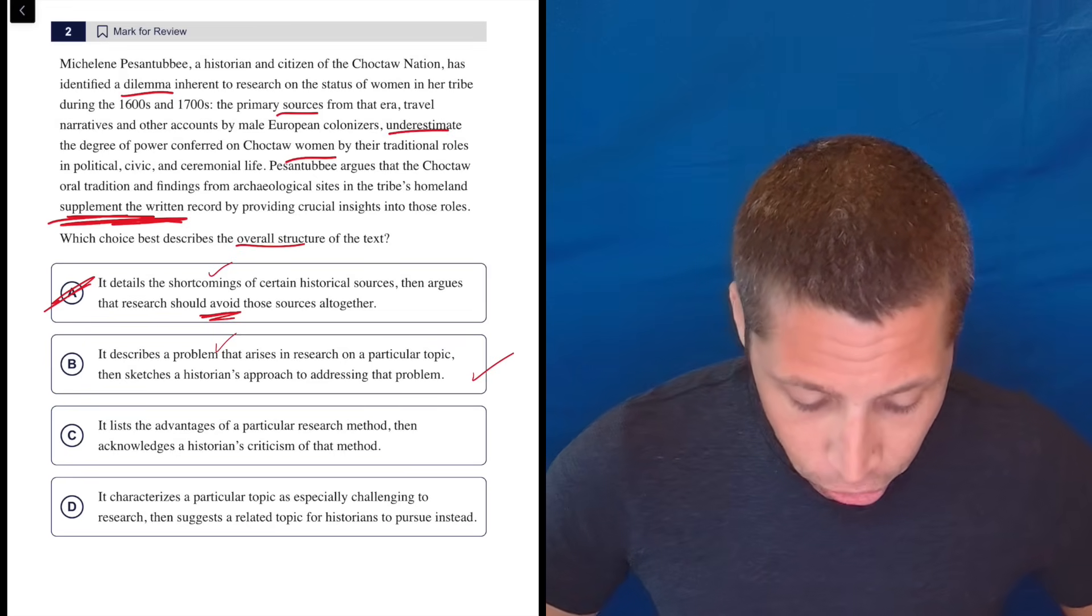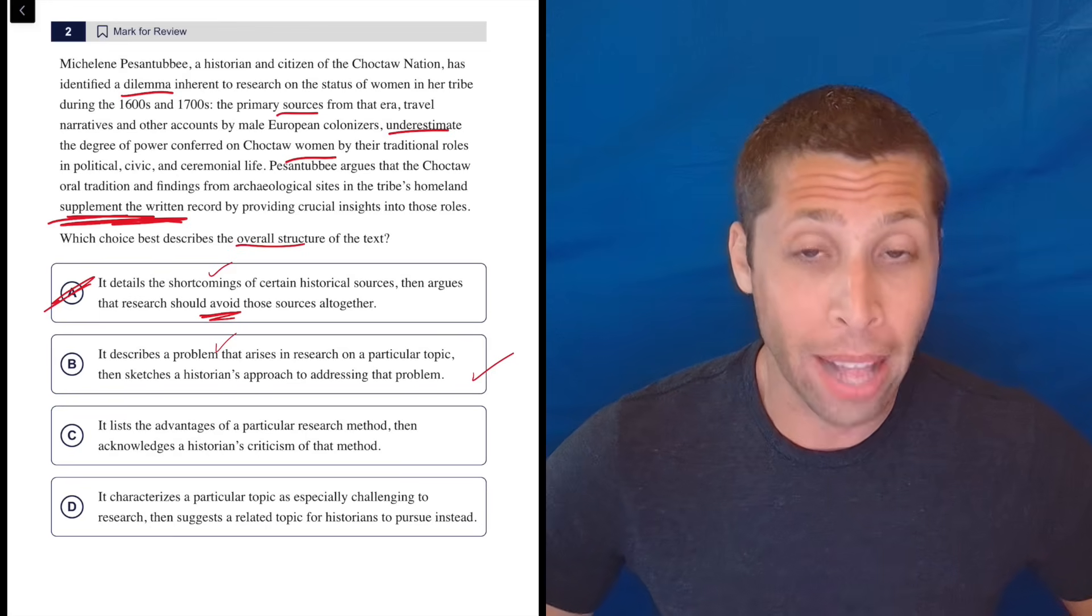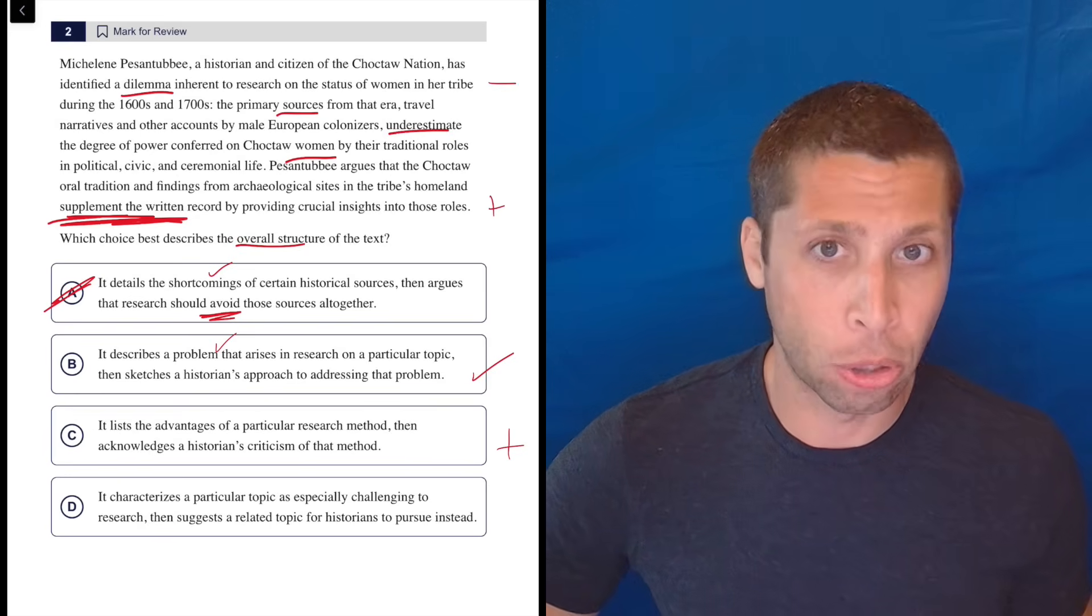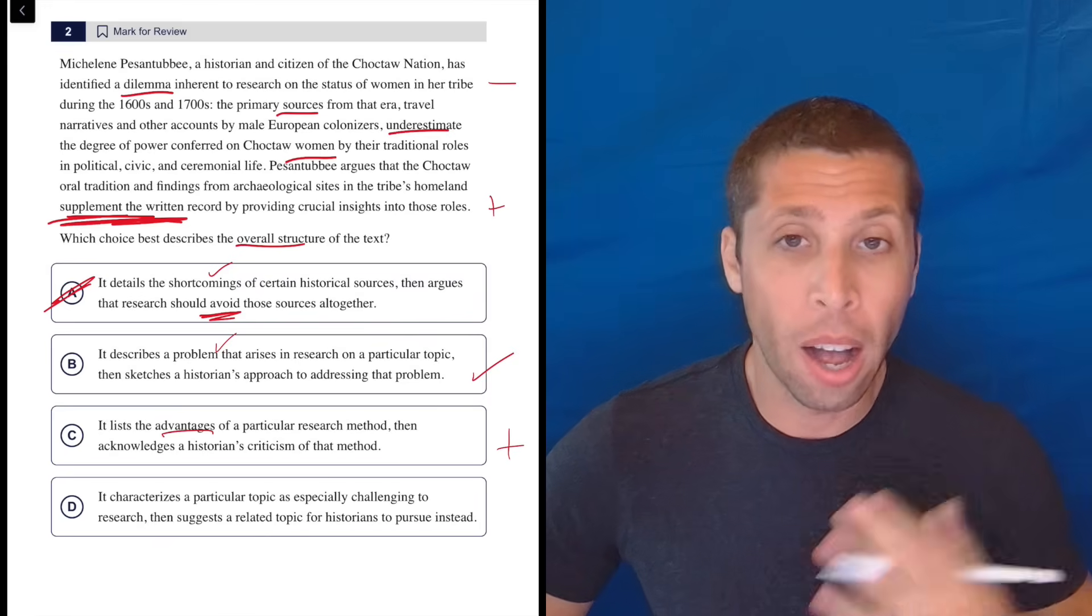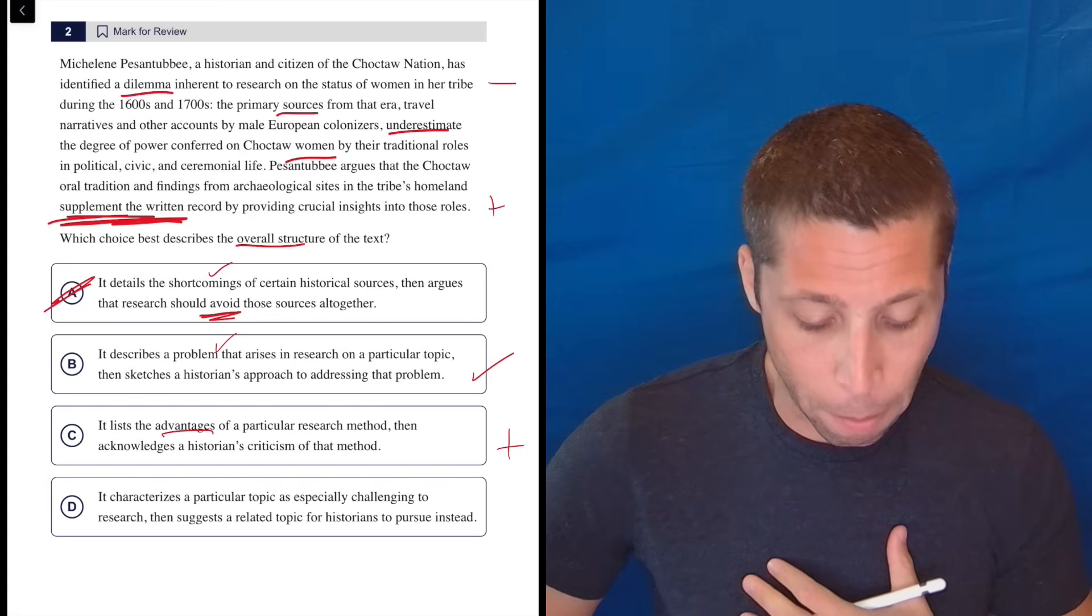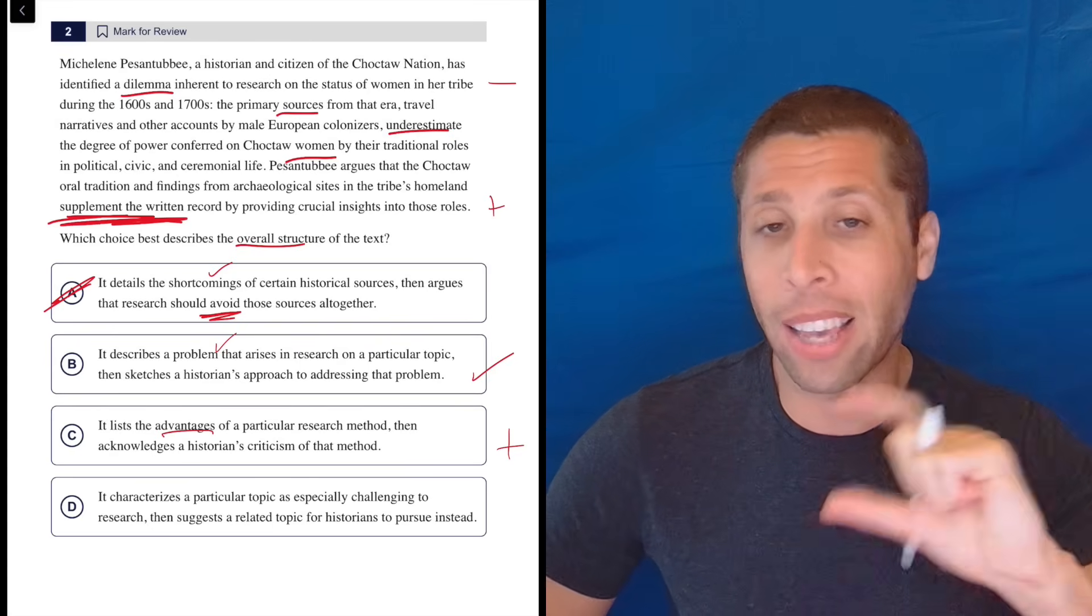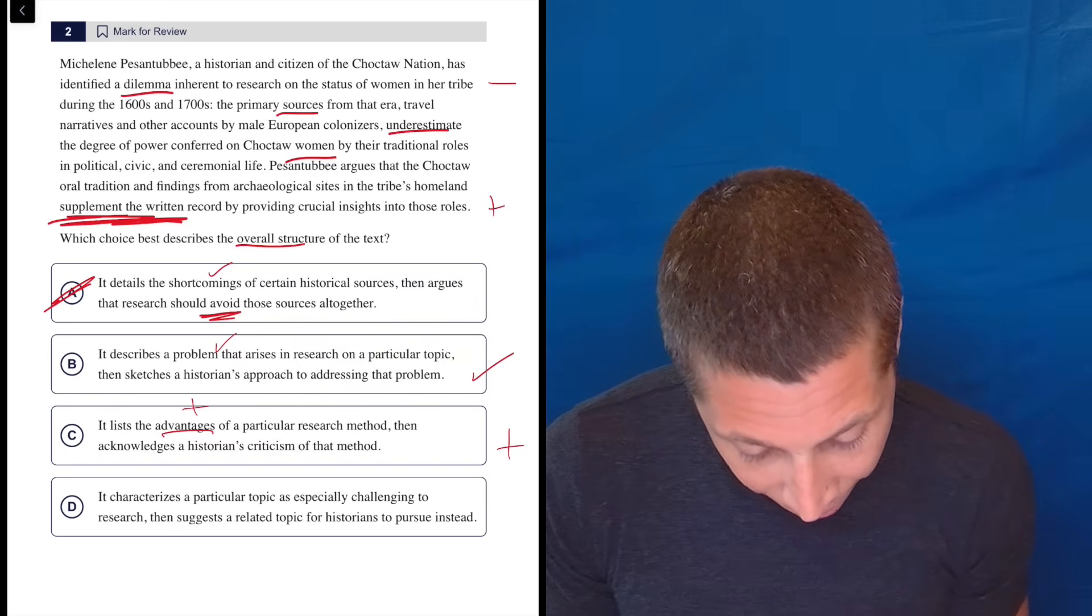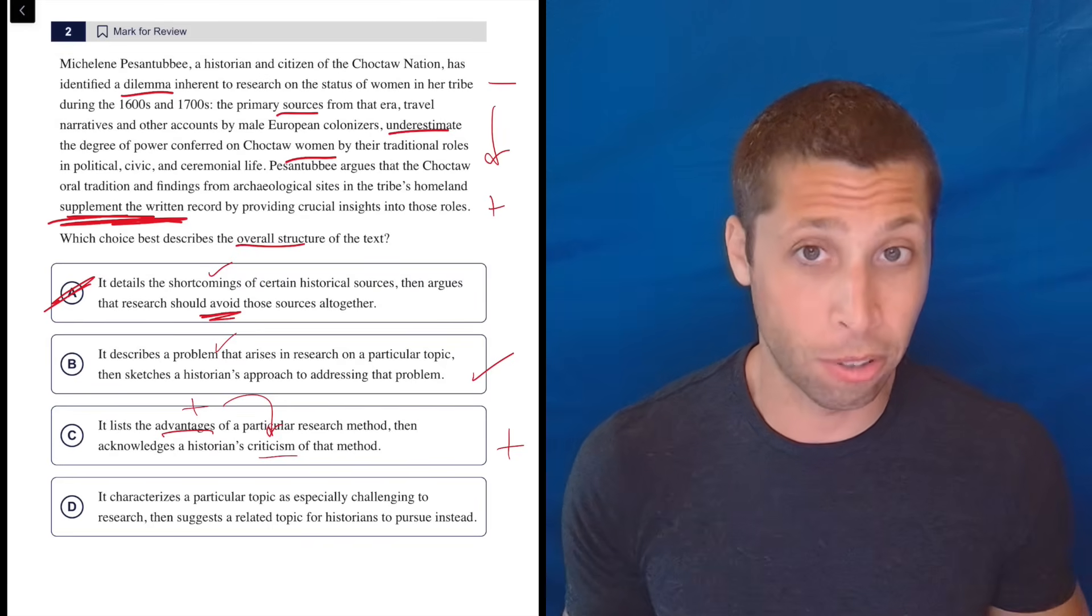C, it lists the advantages of a particular research method. No, it starts with the word dilemma. Dilemma means there's a problem. And so it's not the advantages. So this is just as simple as the connotation is off, right? Maybe it gets positive down here at the end, but certainly the main part of this passage is there is a problem. So it is not the advantages of that method. The method has a flaw. It creates a dilemma and then acknowledges historians' criticism of that method. Well, maybe the first part is a criticism of this particular method. But again, this is kind of flipping things around. Maybe this is kind of going from positive to negative. The passage is going from negative to positive. So connotations maybe help a little bit with choice C.